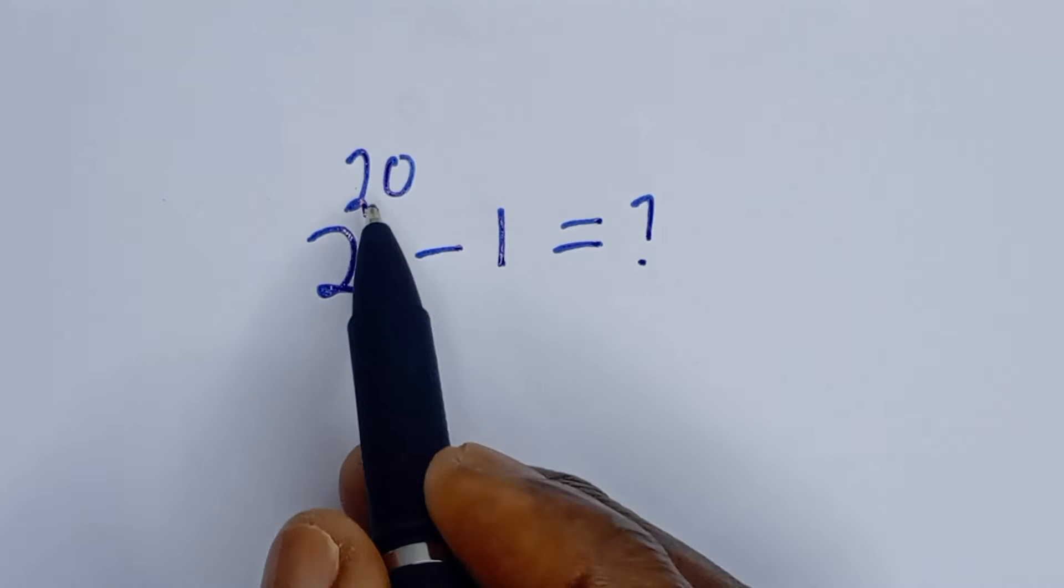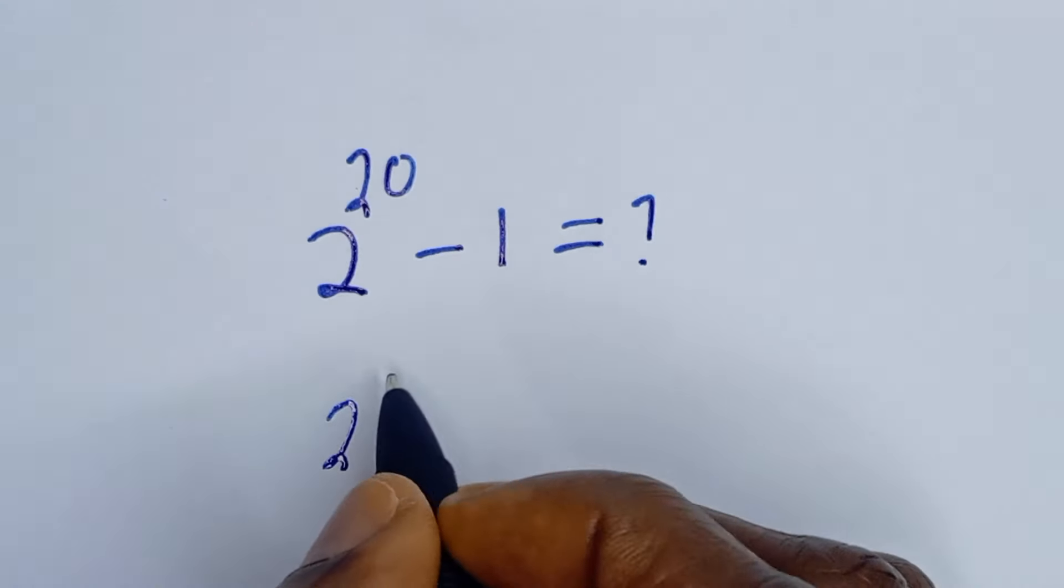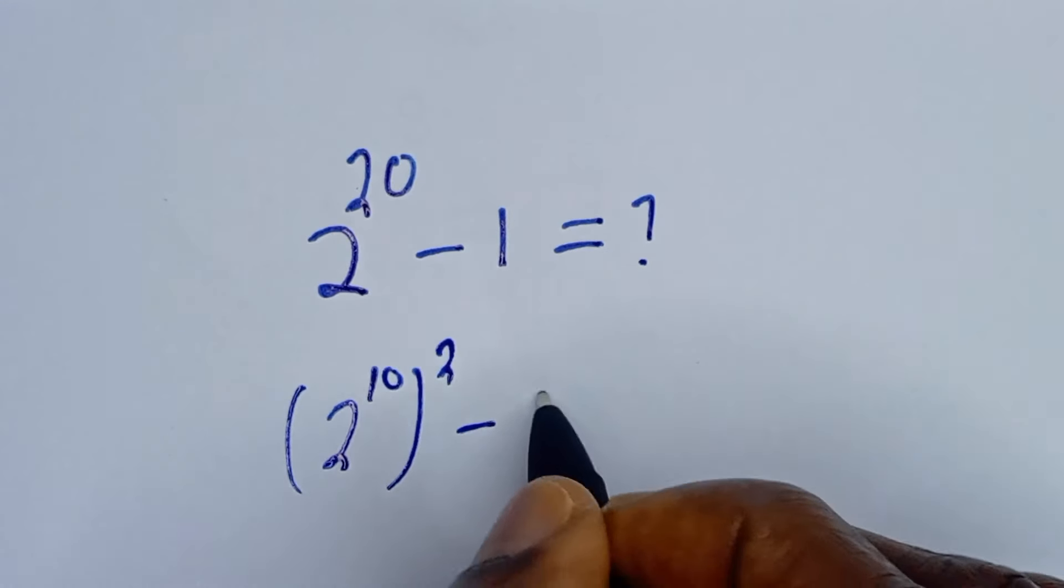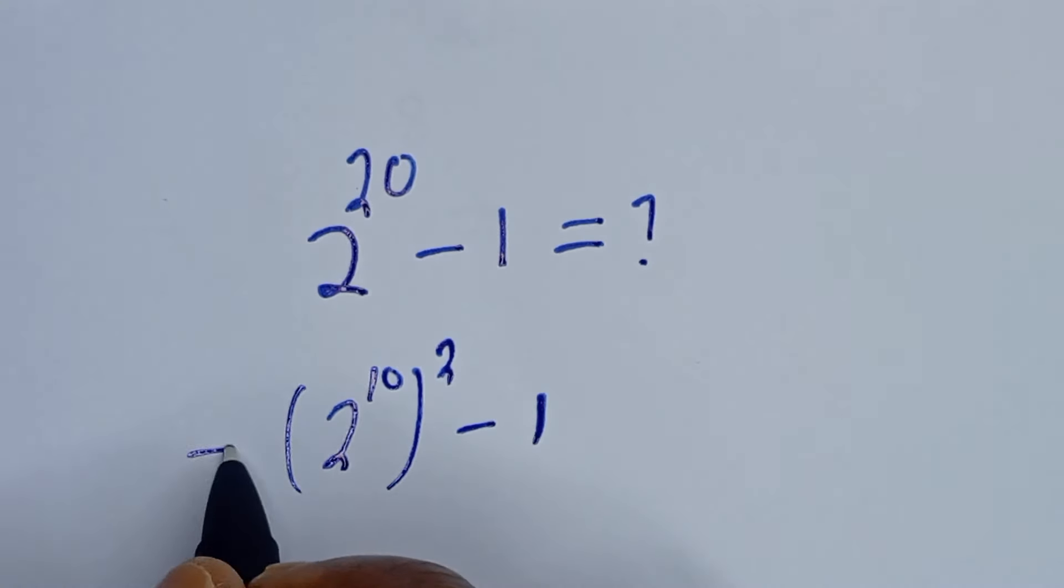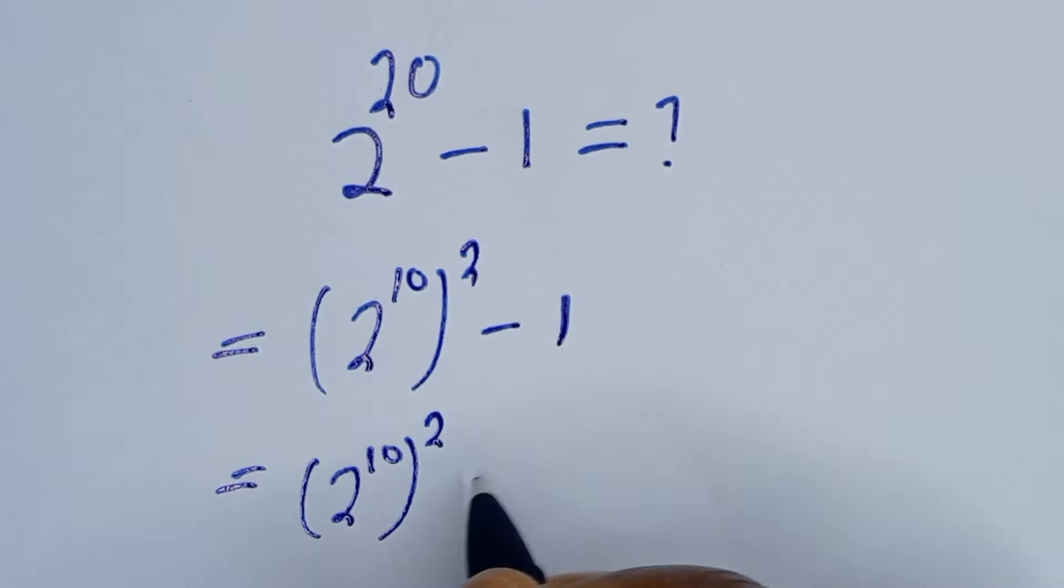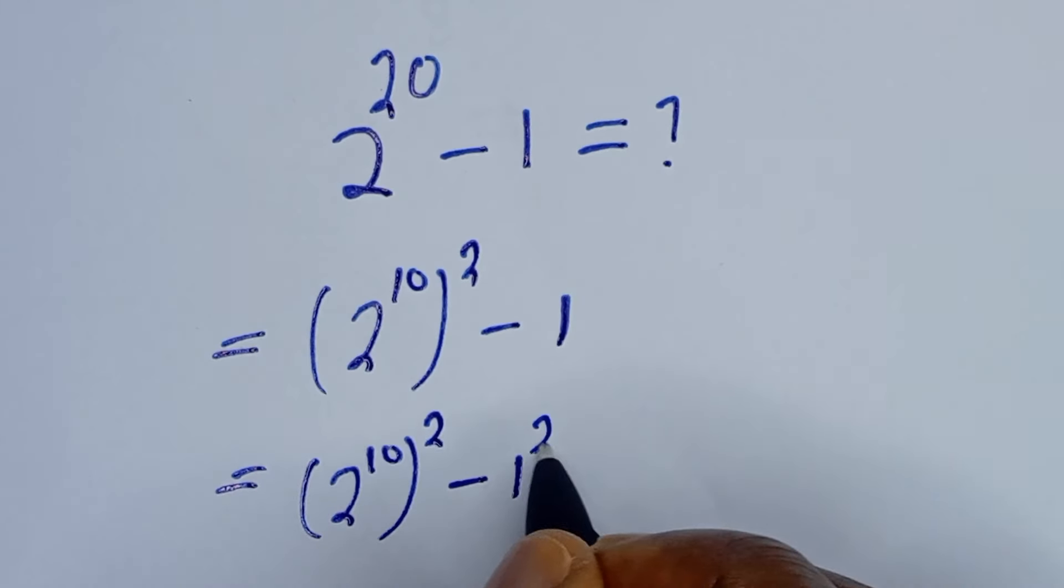Here, 2 to the power of 20 can be written as 2 to the power of 10 squared minus 1. Then, this can also be written as 2 to the power of 10 squared. 1 is written as 1 squared.